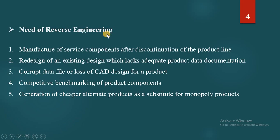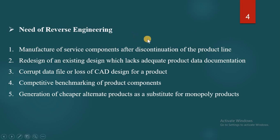Why is there a need for Reverse Engineering? Why do we have to implement this concept in manufacturing? Number 1: Manufacturing of a service component after discontinuation of a product line. Every organization changes their product after a periodic time period, and after that, if you want to provide service components, we can use Reverse Engineering. For example, Tata Motors has discontinued the Tata Nano, but future customers may still need service components, so the company may take help of Reverse Engineering.